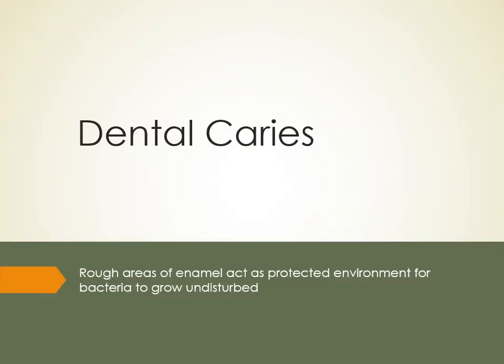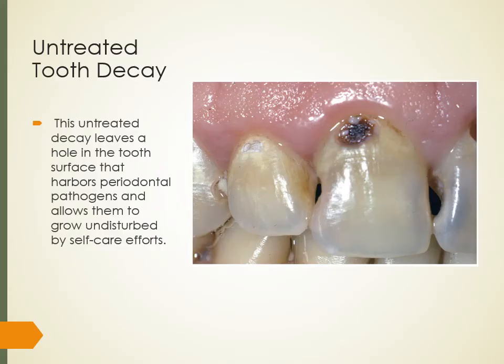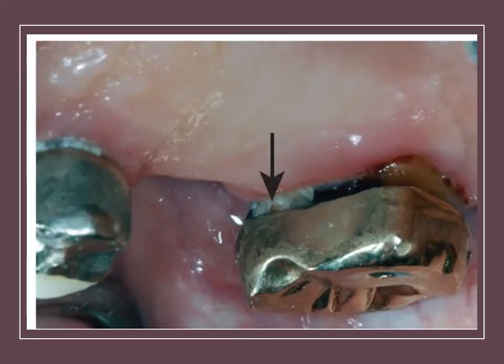Dental caries are rough areas of enamel that act as a protected environment for bacteria to grow undisturbed, causing inflammation and contributing to periodontal disease. Untreated tooth decay leaves a hole in the tooth surface that harbors periodontal pathogens and allows them to grow undisturbed by self-care efforts. Bacteria and plaque get harbored inside these lesions and cause inflammation over time, with rounding of the adjacent gingival tissue visible clinically.